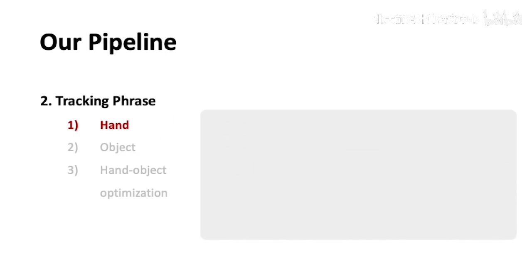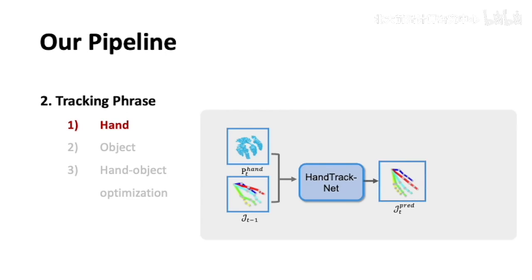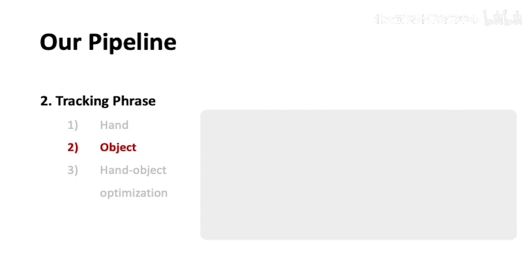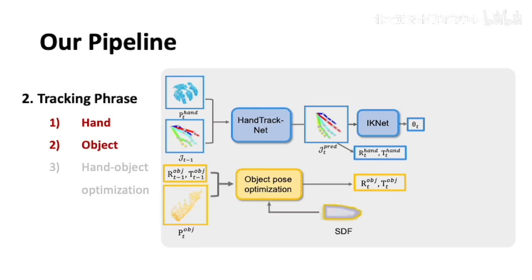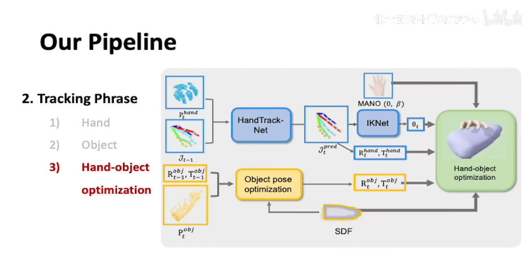After initialization, our system performs online pose tracking and reconstruction for the hand and object. For hand, at each frame, HandTrackNet outputs hand joint positions JT-PRED. To further obtain the hand mesh, we introduce an inverse kinematics network that converts the joint positions into a MANO pose code. For object pose tracking, we simply perform online optimization based on depth-to-SDF conformation. These two modules can run in parallel and reach a speed of more than 25 FPS. Finally, to enforce physical realness, we construct several prior energy terms using the hand mesh and object SDF, and then refine the hand pose via optimization.